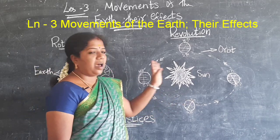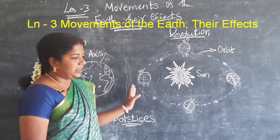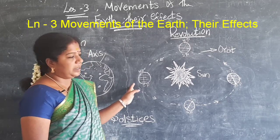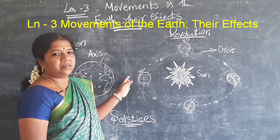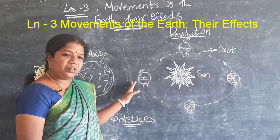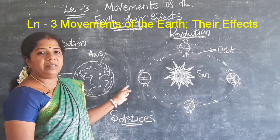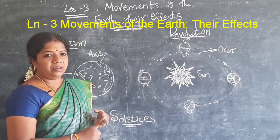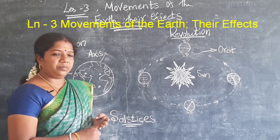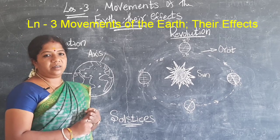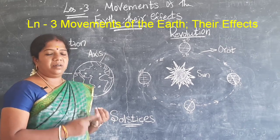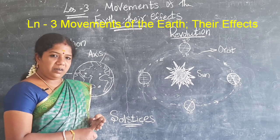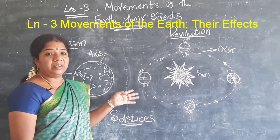Likewise, as the earth revolves around the sun, we get seasons. There are four main seasons — how many seasons, children? There are four main seasons: summer, winter, spring, and autumn.